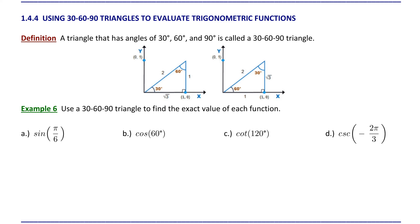Let's talk about that special 30-60-90 triangle. To determine the proportions of the sides, we can start with an equilateral triangle. Remembering that the sum of the angles in a triangle is 180 degrees, and if we're dealing with an equilateral triangle, let's suppose that all sides have length 2, then all of the angles are going to be equal. So 180 divided by 3 gives me 60-degree angles for all three angles.